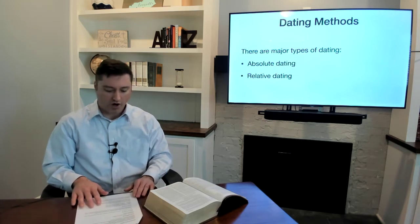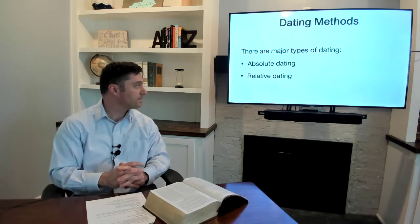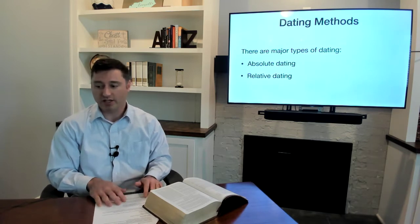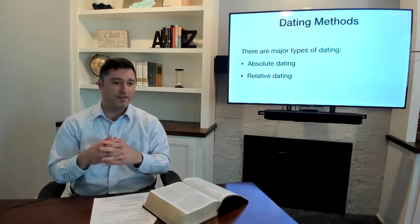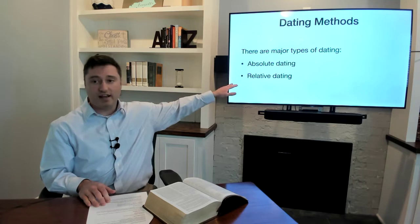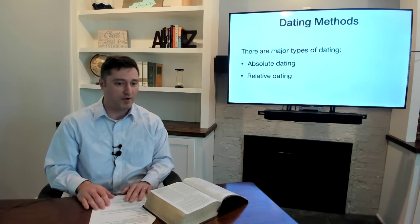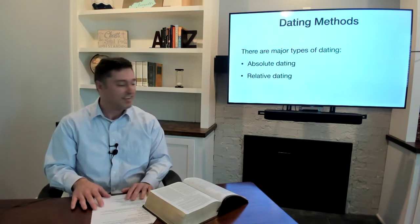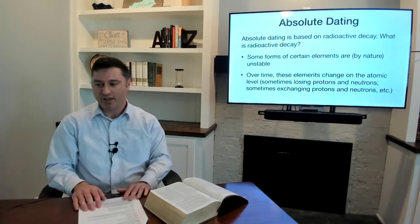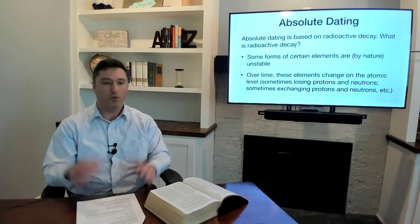Now there are two different types of dating methods that I want to talk about. There's absolute dating and relative dating. And I know what some of you might be thinking, this is not talking about relationships. For example, if I say my wife and I were absolutely dating, that is not what this is talking about. And relative dating is not talking about what I observed at times as I grew up in Arkansas, okay? We're not talking about cousins dating. That's not what we're talking about.